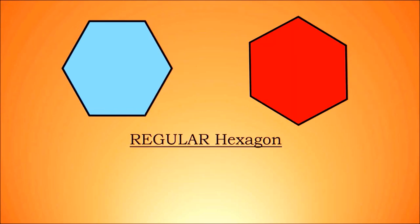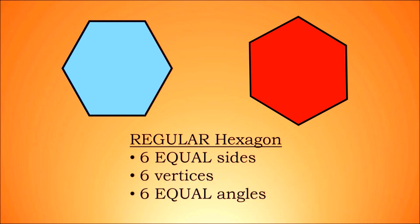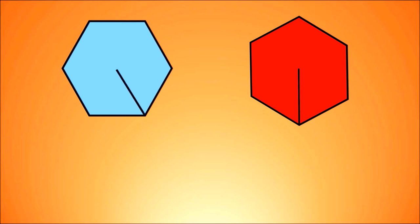This is different from a regular hexagon. A regular hexagon has six equivalent length sides. In addition to having six vertices like a standard hexagon, it has six equal measure angles.